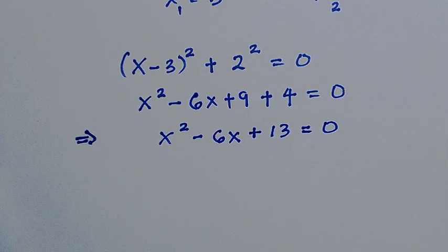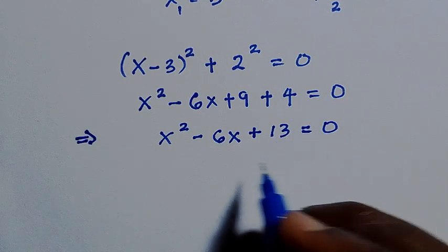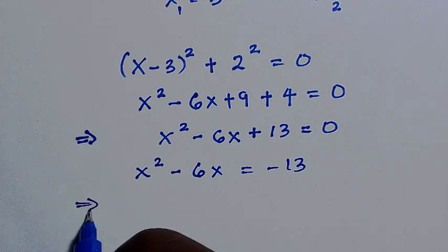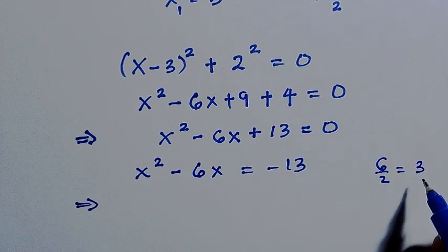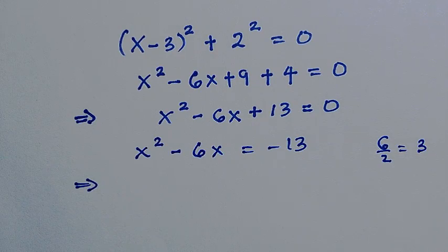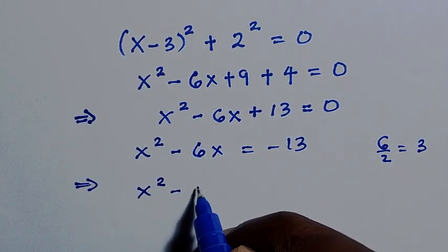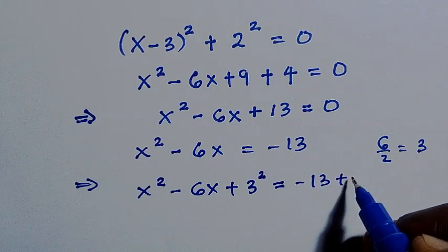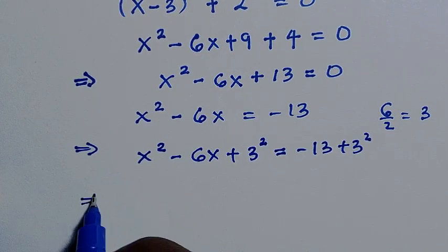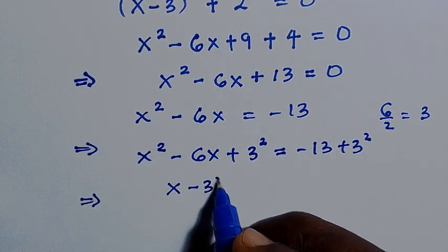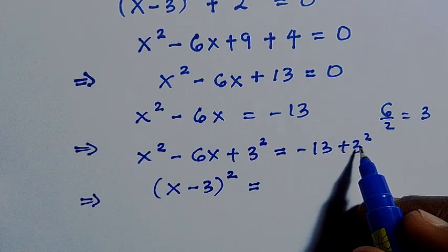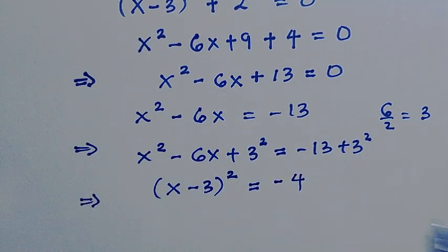I'm going to show you an amazing method of solving this quadratic equation without applying the quadratic formula. We transfer 13 to the other side: x squared minus 6x equals minus 13. Then take 6 divided by 2, which is 3, square it, and add 3 squared to both sides: x squared minus 6x plus 3 squared equals minus 13 plus 9. This combines to (x minus 3) squared equals minus 4.